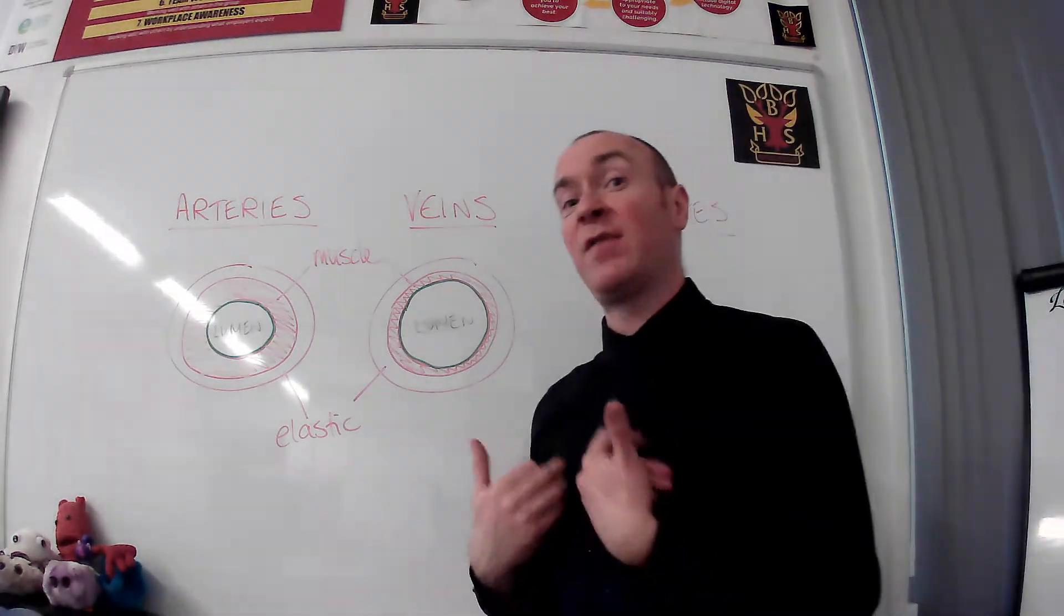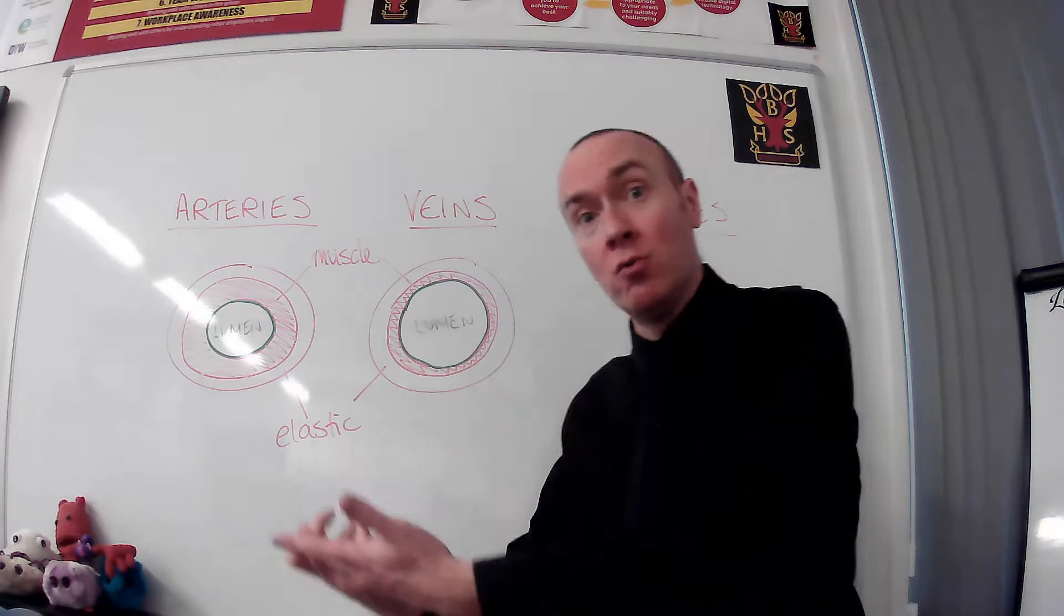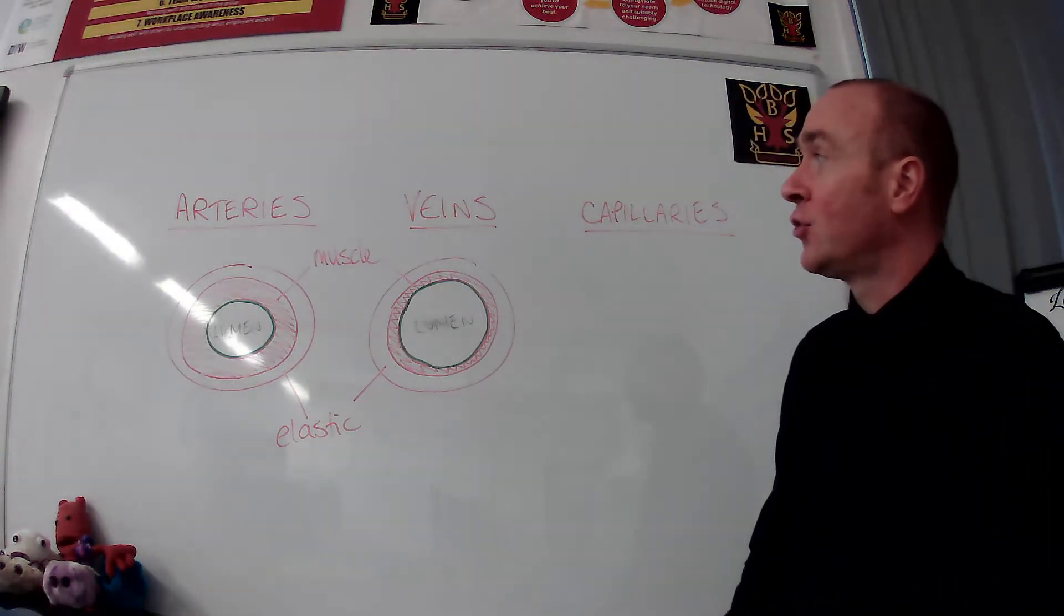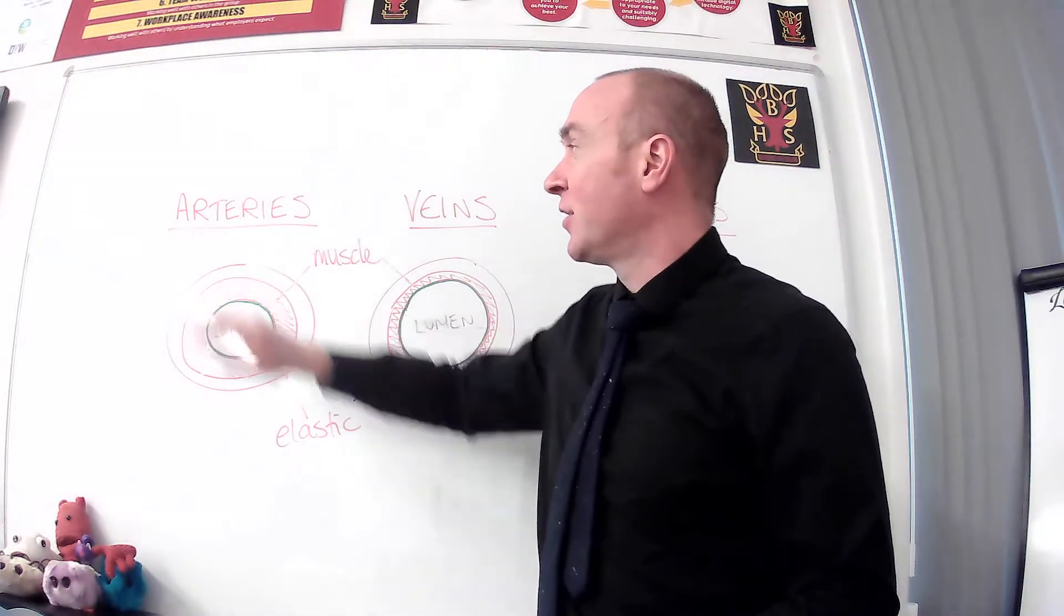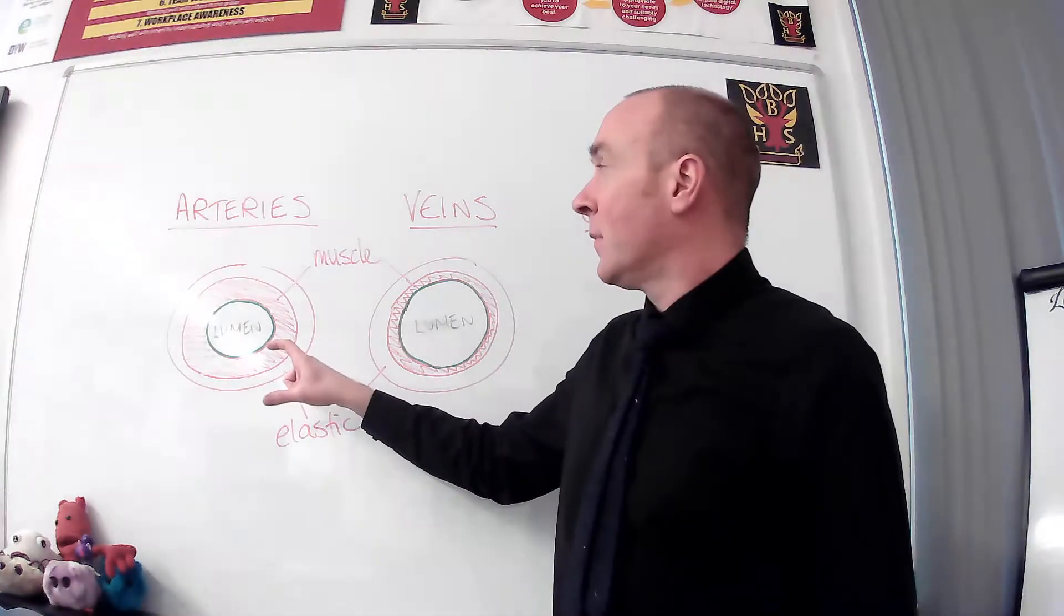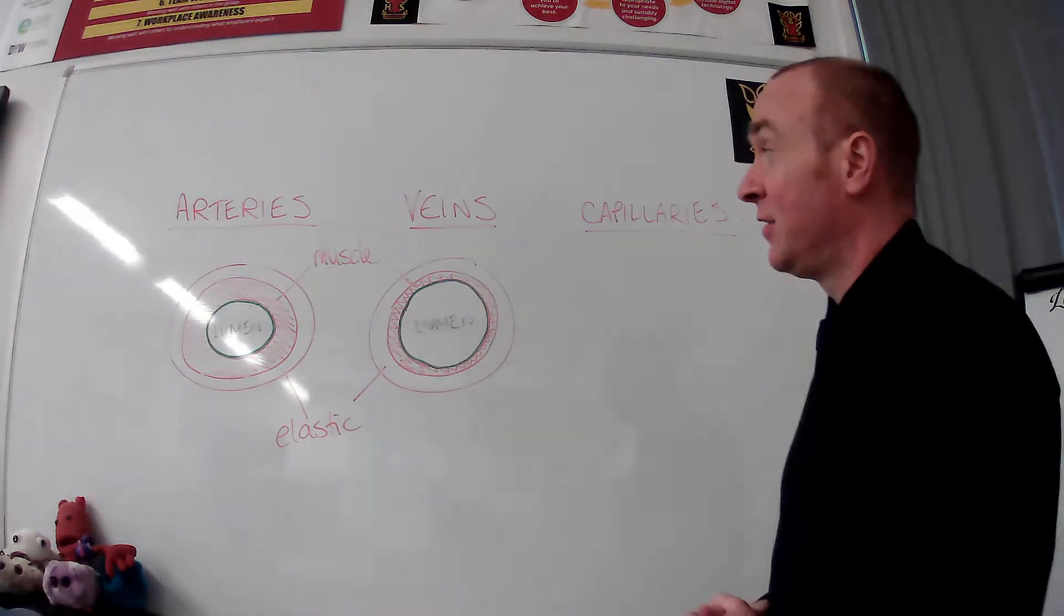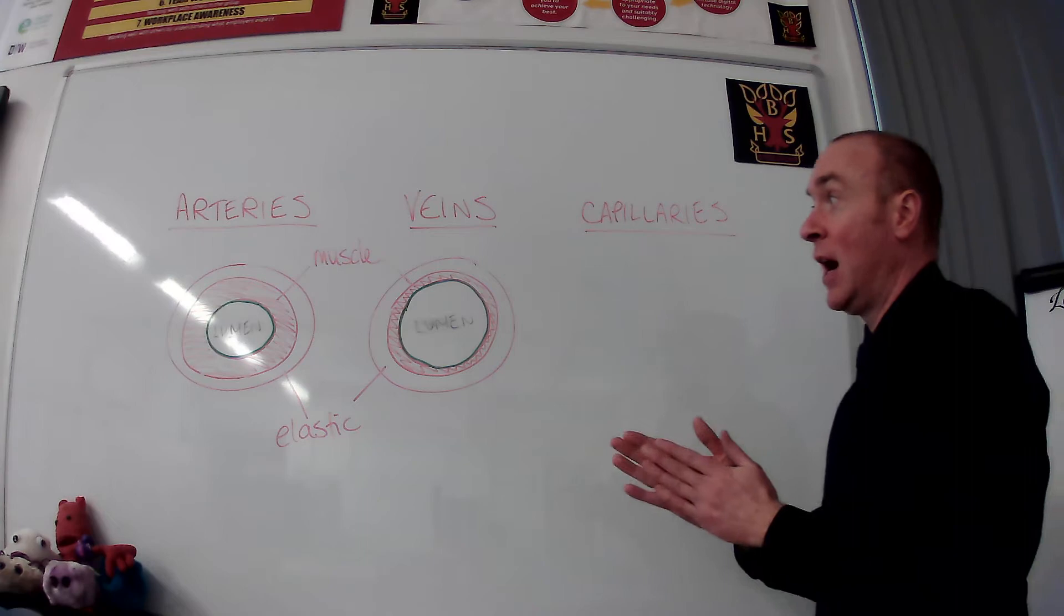Now that's not the only reason why arteries contain higher pressure blood. Because the blood remember in an artery has just left the heart. So it's literally just been pushed out of the heart. So it will have higher pressure blood as a result of that as well. So that is basically everything you need to know about the difference between arteries and veins.